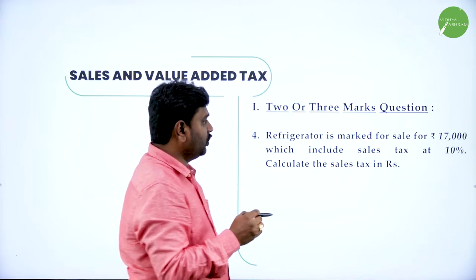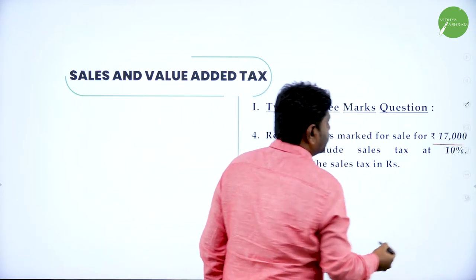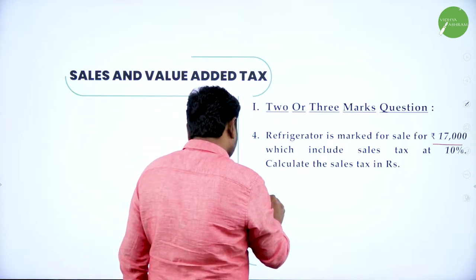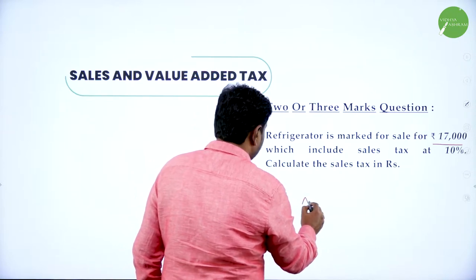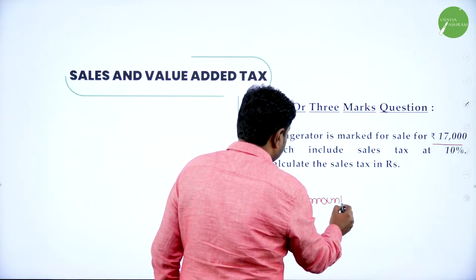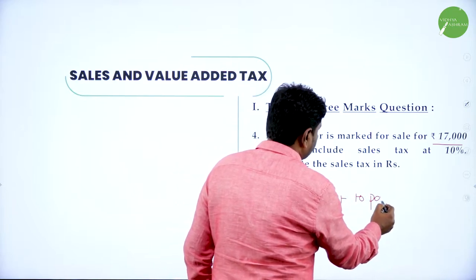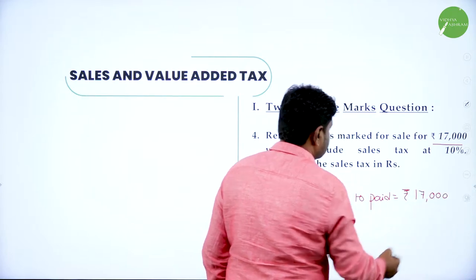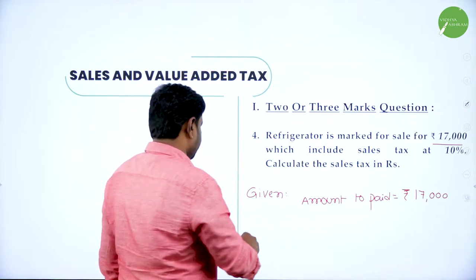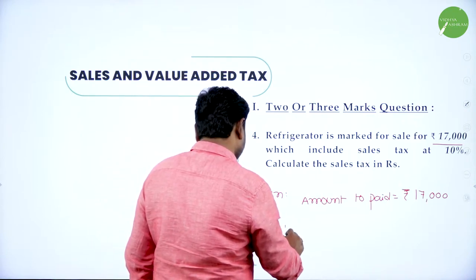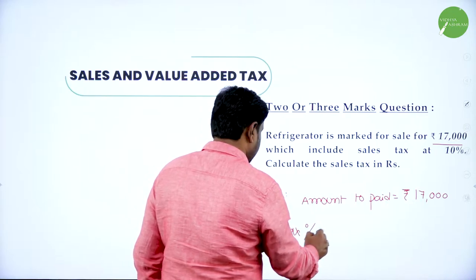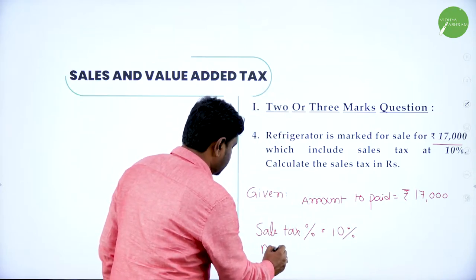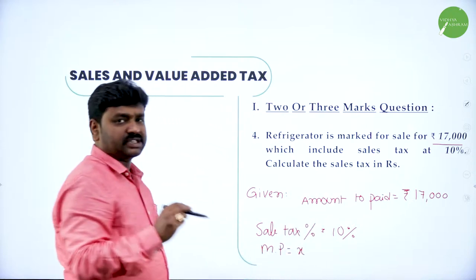They gave an amount, and that amount is including tax. Including tax means we call it as amount paid. So the given amount to be paid is rupees 17,000 — this is given. They have also given sale tax percent as 10%, and they have not given market price. So market price is not given; we will assume it as X. Let X be the market price.